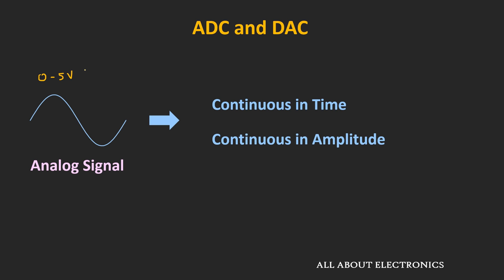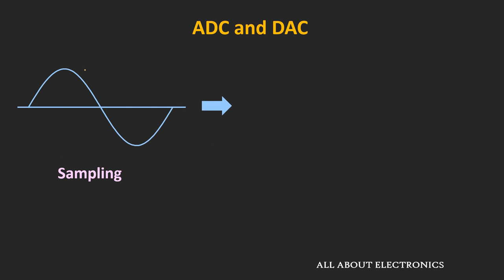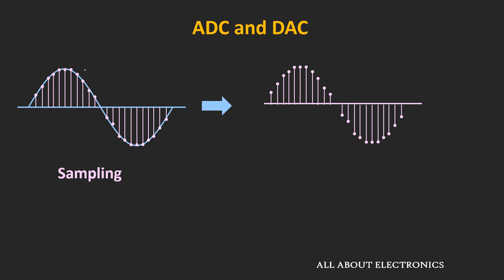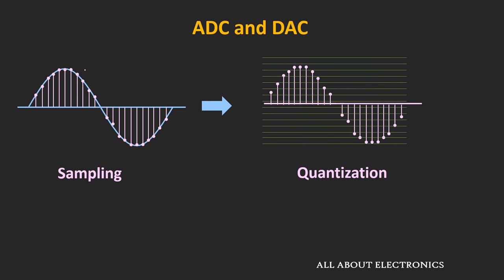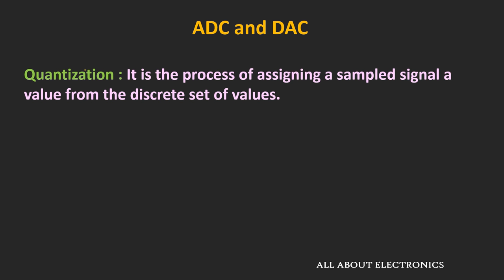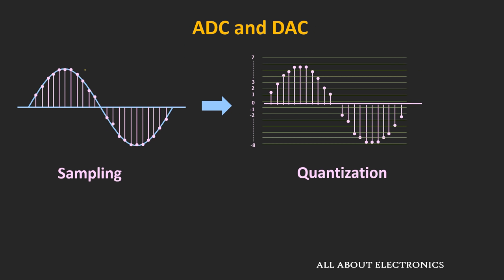Let's see the steps involved in analog-to-digital conversion. First, the analog signal is sampled at a particular rate. After sampling, the signal is quantized into finite levels, and after quantization, it is encoded in binary format. In the quantization process, a sampled signal is assigned a particular value from a discrete set of values.